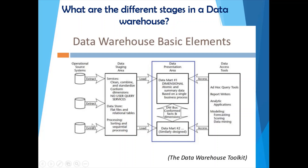The first stage is your source system. There can be different kinds of source systems — databases, flat files, mainframe systems, and so on. You extract data from those source systems, clean it, apply your transactional and business rules, standardize that data, and do all of that in your staging area. You fetch the data into your staging area and apply all your transformational rules.